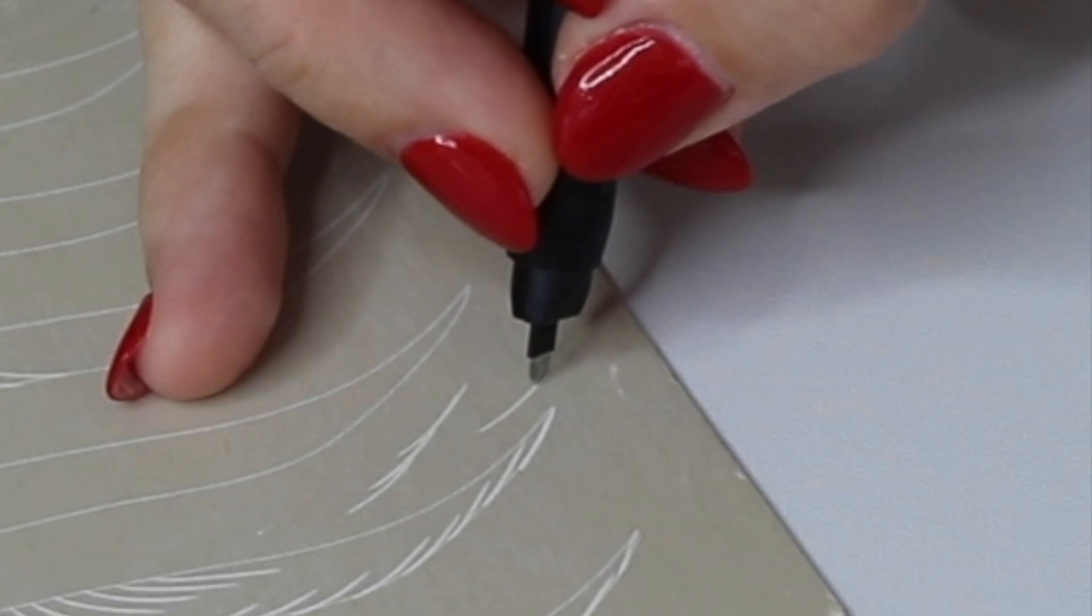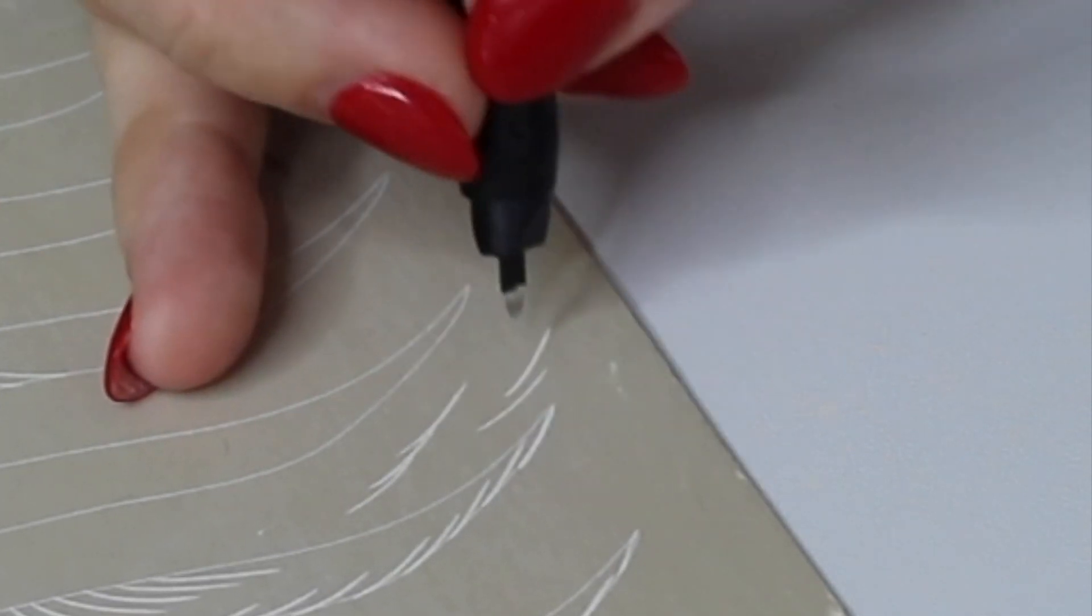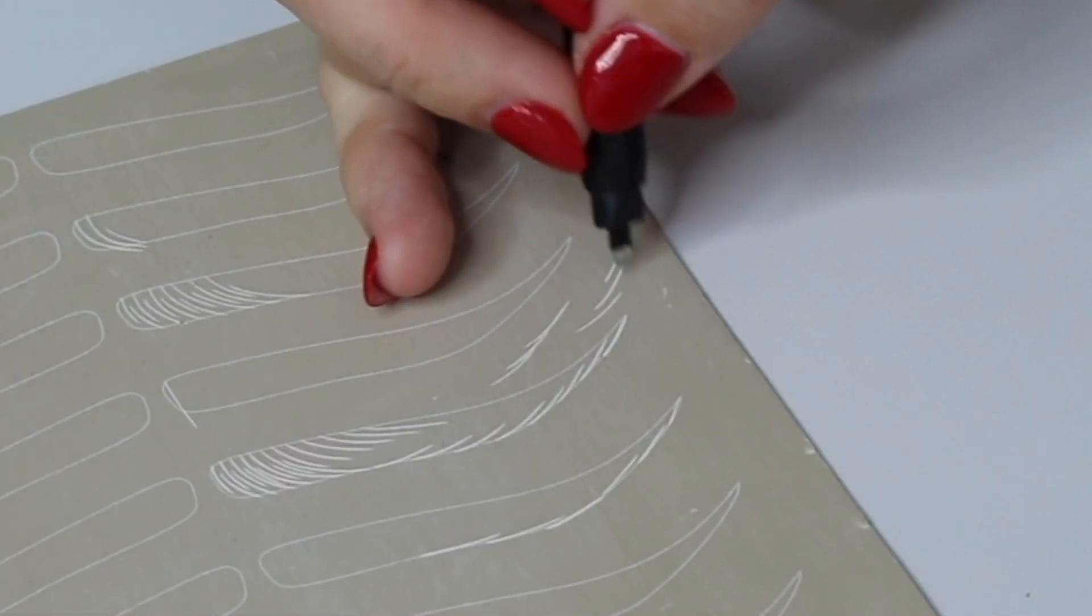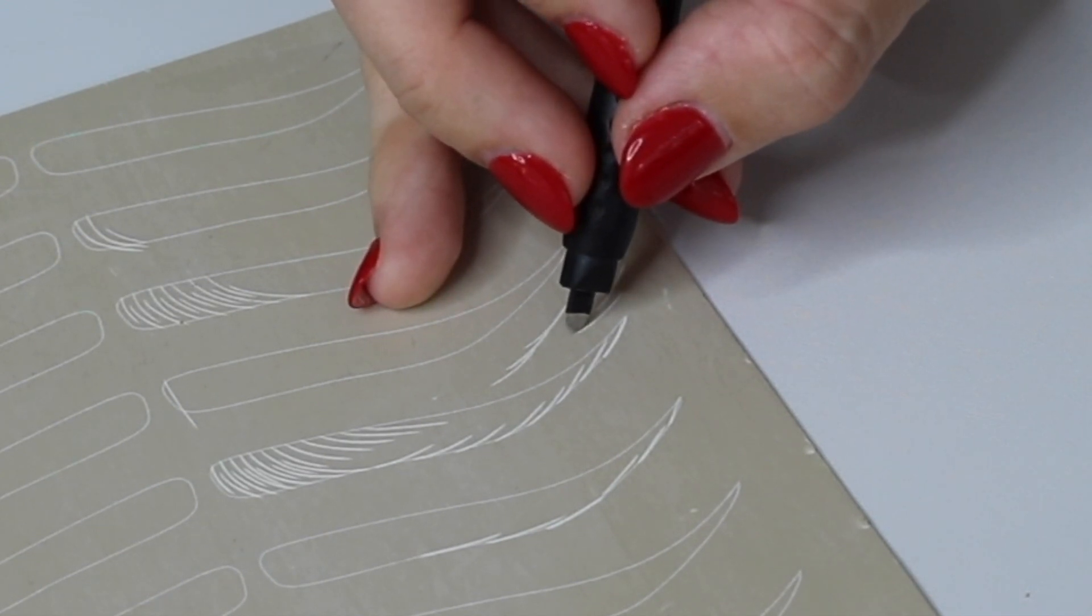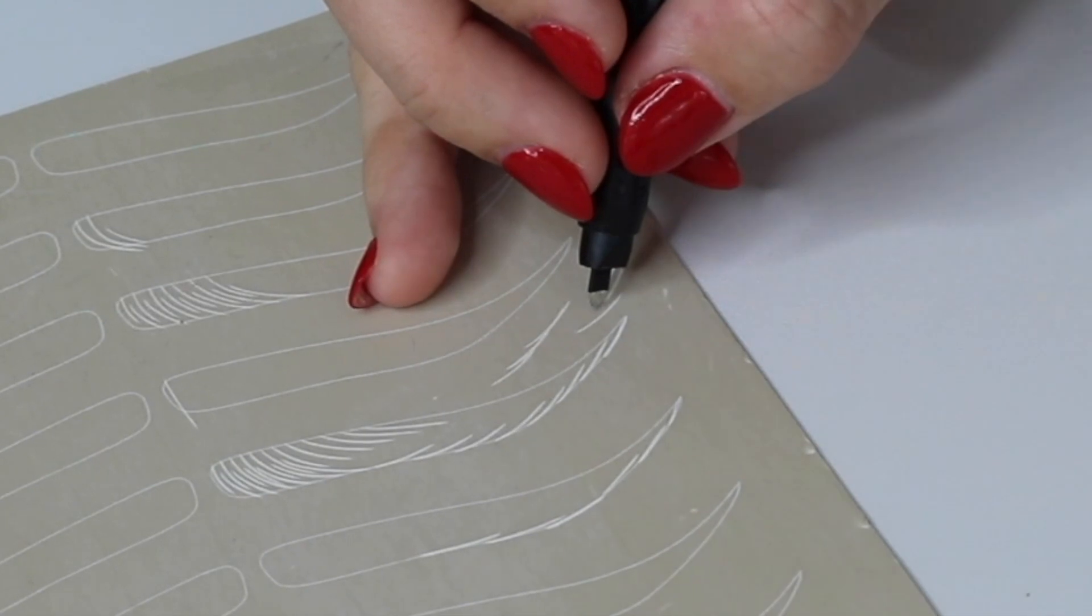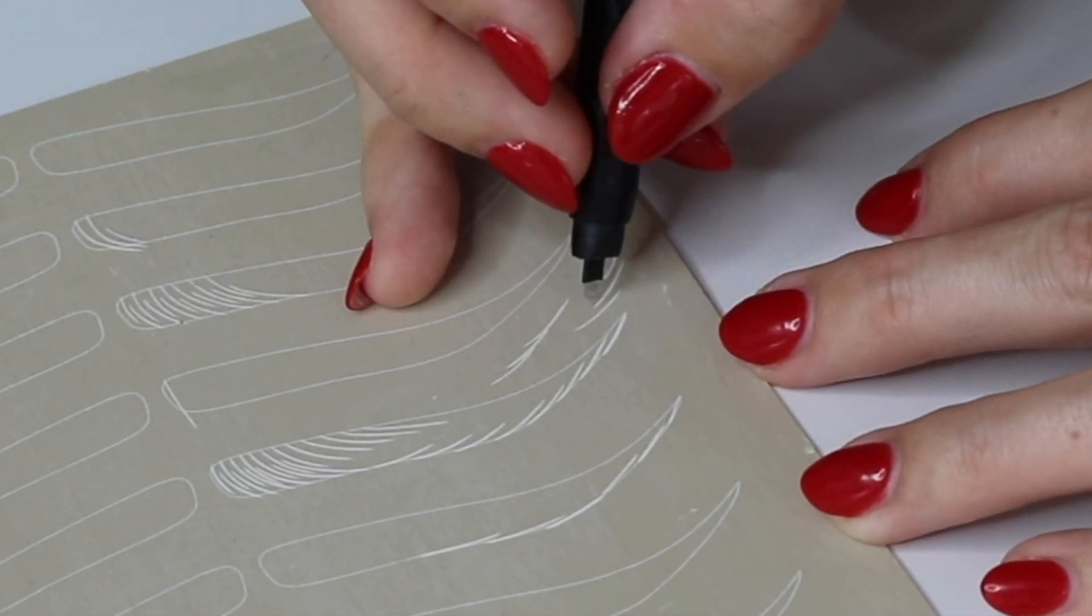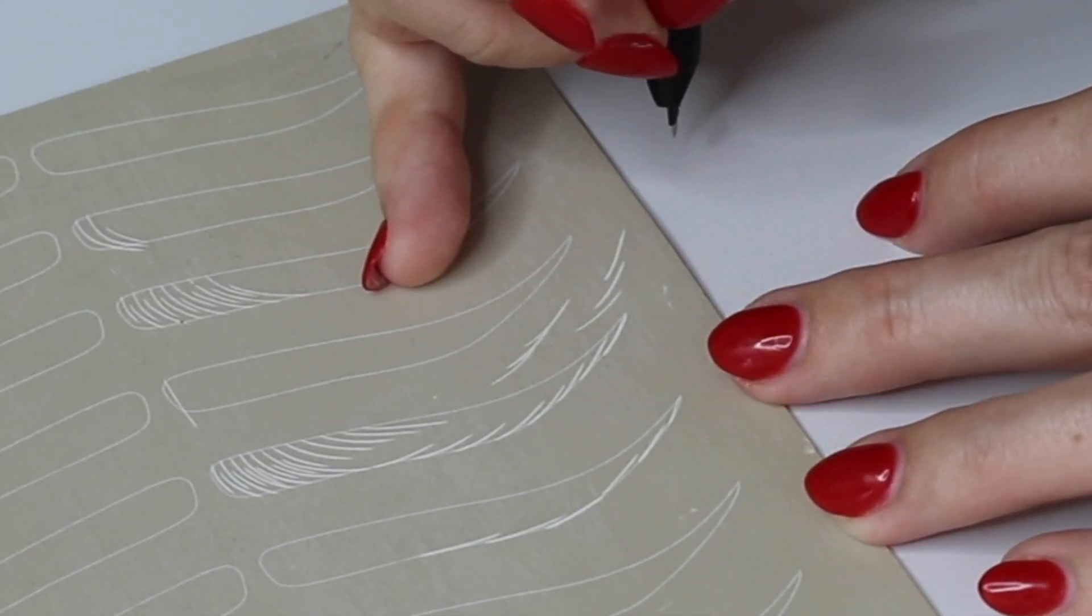So if I want my strokes to connect I need to pay attention to the direction of my blade. A lot of times what I see is something kind of like this and the reason why they're not connecting is because of the direction of the blade when it started. So I was here and on this one I was here. Notice how my blade is pointing this way. So that's the way it's going to go.